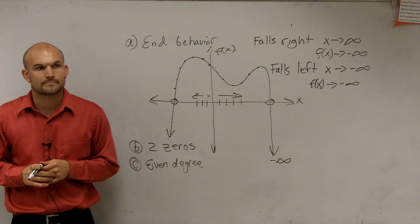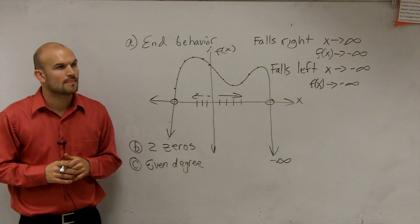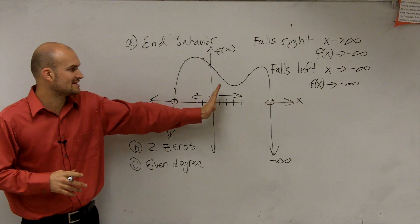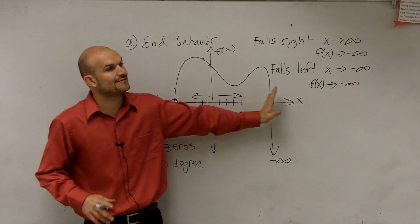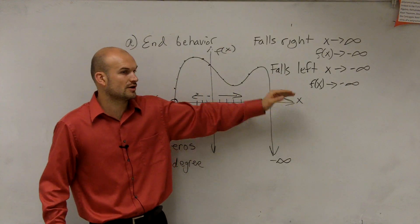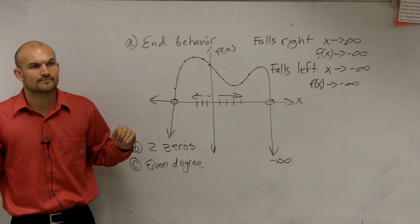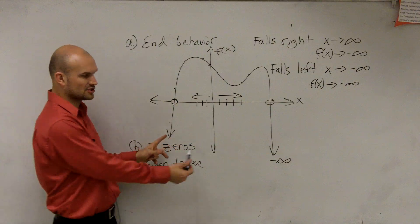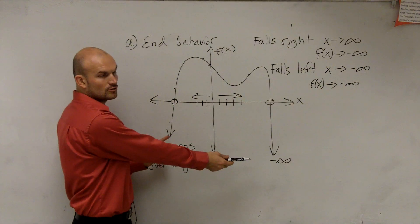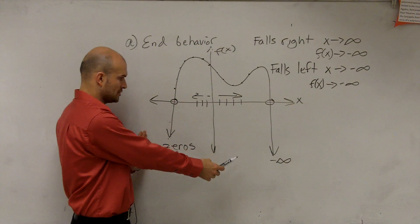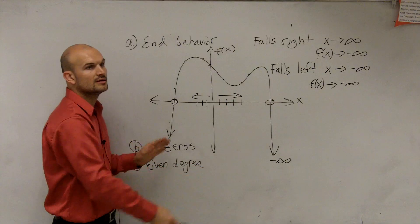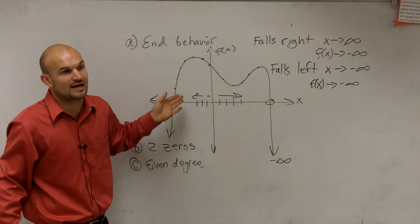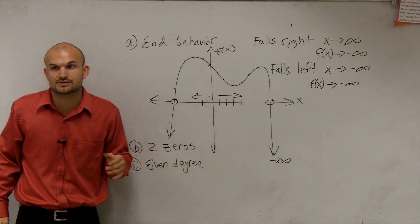A student asks: do we have to include both right and left end behavior? Yes. Because that's the end behavior as x goes to the left, and that's the end behavior as x goes to the right. There are two end behaviors — you can see two arrows where the graph ends up going to negative infinity in both directions, depending on whether x is going right or left.